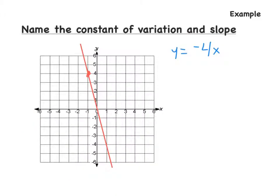Now we have a graph and we need to name the constant of variation and the slope. We are given the equation y equals negative 4x. The graph goes through (0, 0), so we know it's a direct variation, and we are given a point (4, negative 1). We are trying to find the constant of variation and the slope. The constant of variation in this equation is negative 4 — it's already given right here for us.